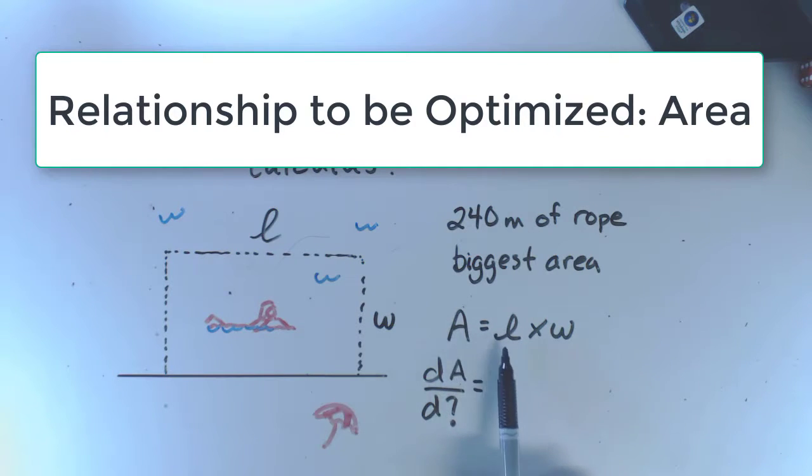First of all, there's a relationship that you need to maximize. In this case, it's area. Unfortunately, area is being expressed as the product of two different variables.